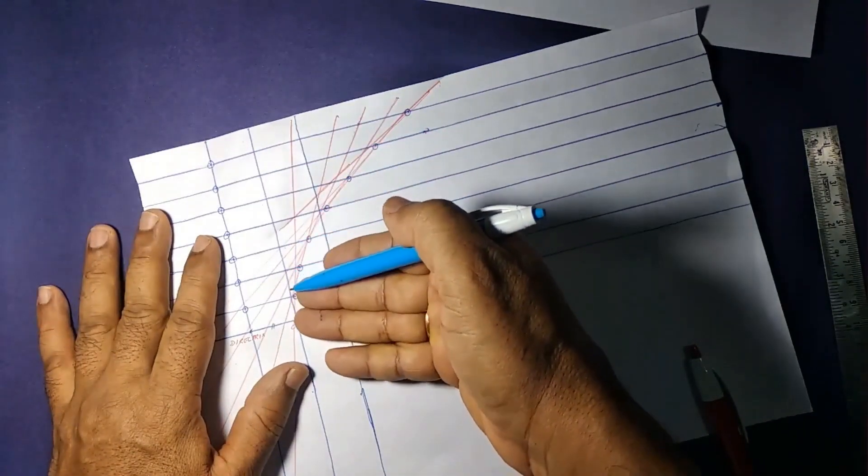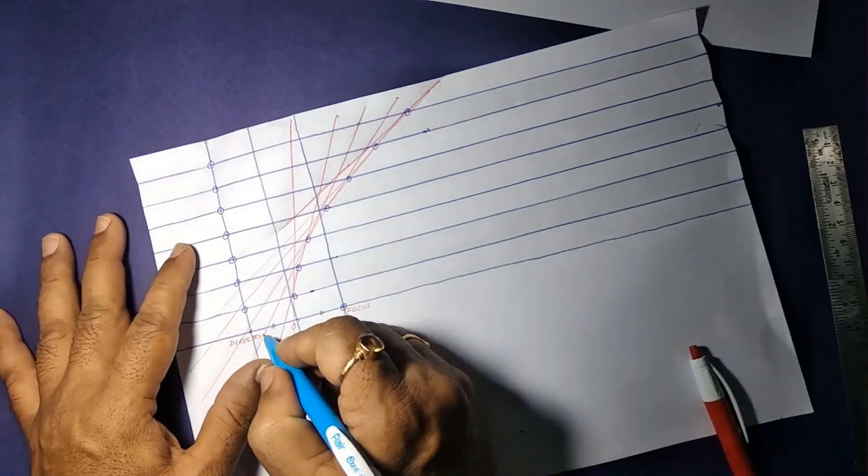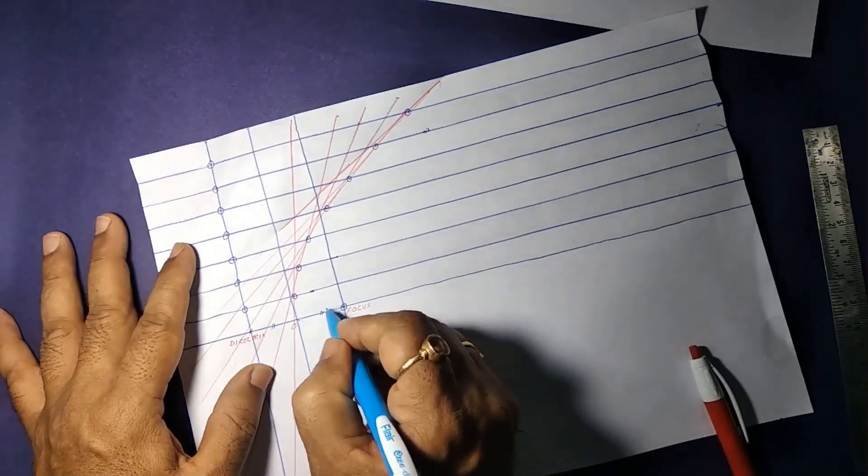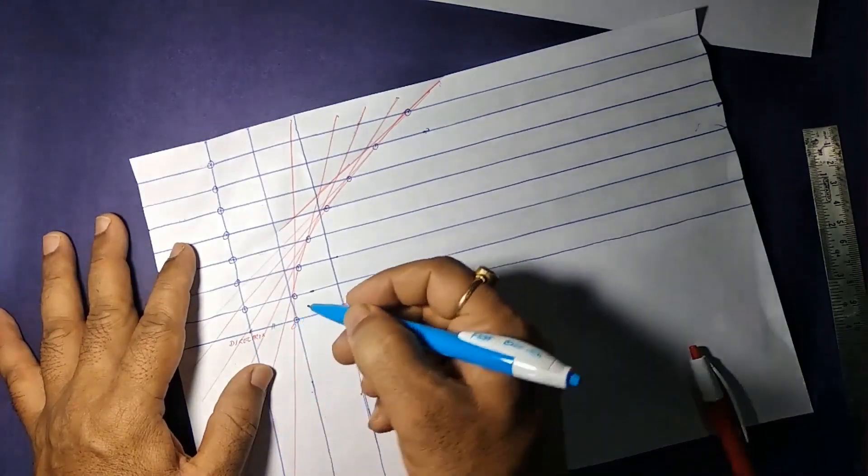This is the parabola curve on the top part of the paper. And we would like to continue the same thing on the bottom part of the paper, so that the parabola is complete.